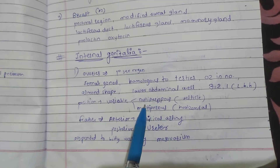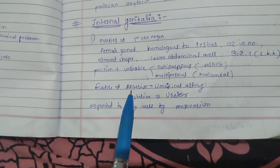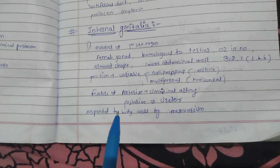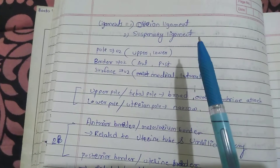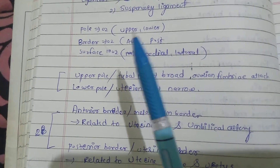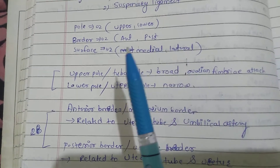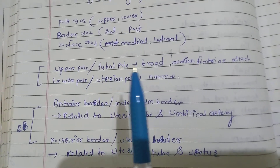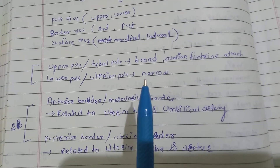Features of the ovary: anteriorly related to the umbilical artery, posteriorly related to the ureter, and suspended to the body wall by the mesovarium. Ligaments are the ovarian ligament and suspensory ligament. It contains two poles — upper pole and lower pole — and two borders: anterior and posterior. Surfaces are two: medial and lateral. The upper pole is known as the tubal pole, which is broad with ovarian fimbriae attached. The lower pole is the uterine pole, which is narrow.